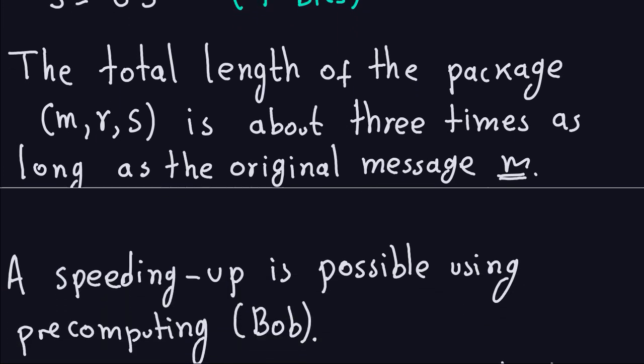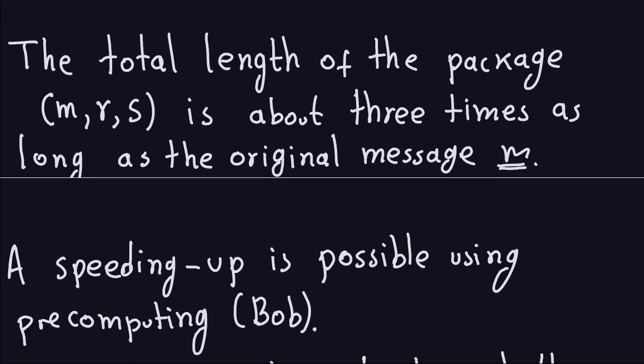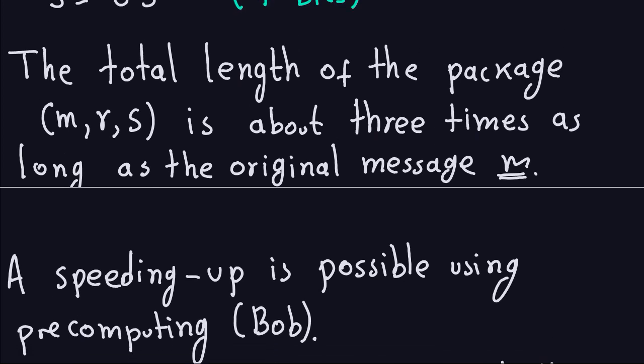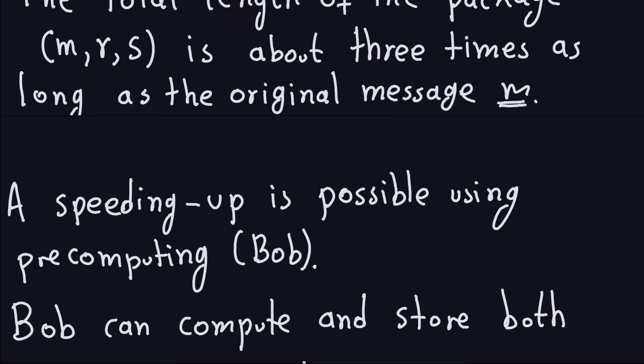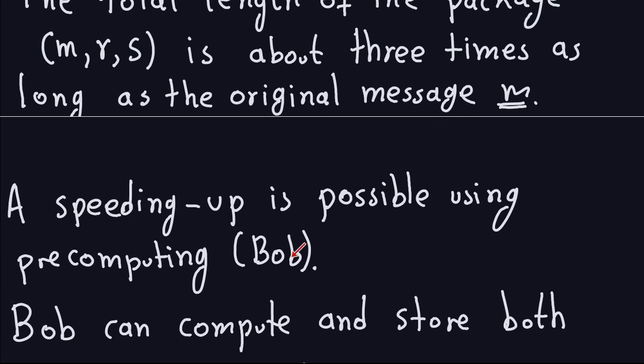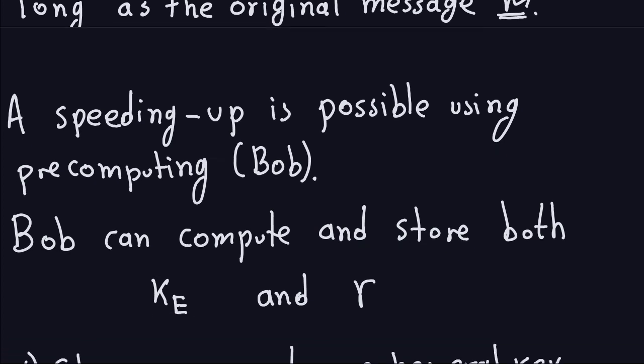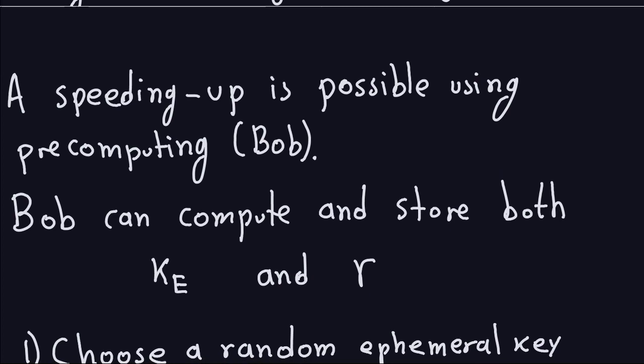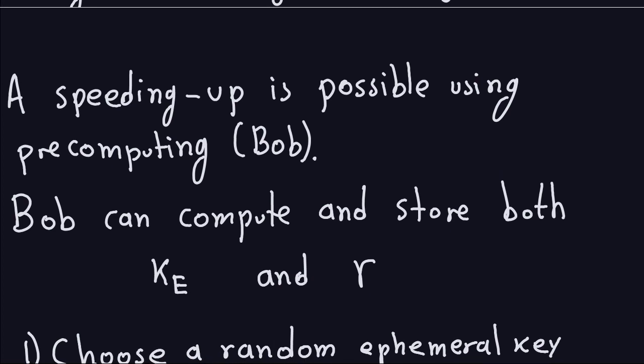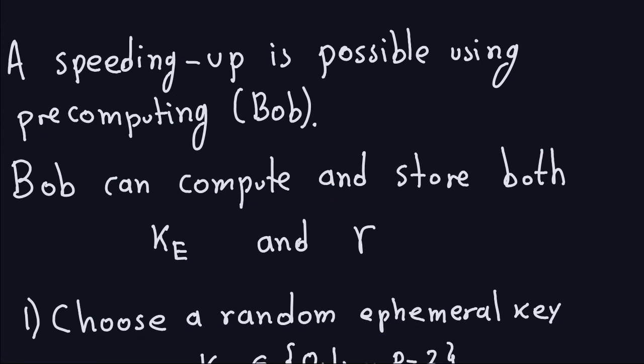One way in which you can speed up the process, and this is on the side of Bob, is Bob can do certain pre-computation, so he can save some times if you want to trade off storage by time. Bob, it doesn't matter what message it is, he can always pre-compute and store both the ephemeral key and the value of R.